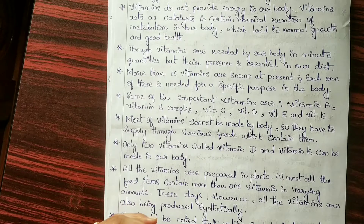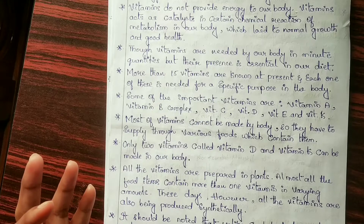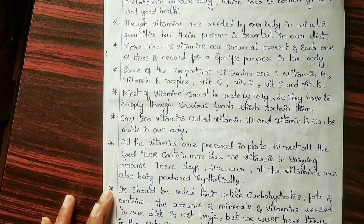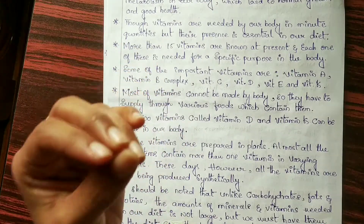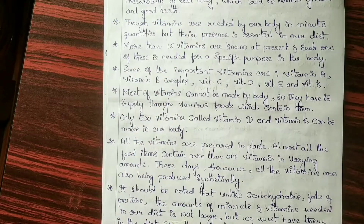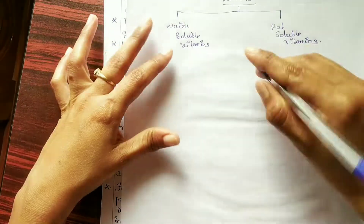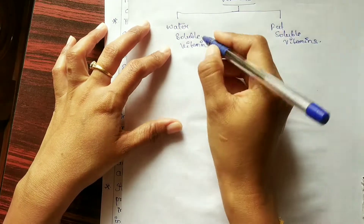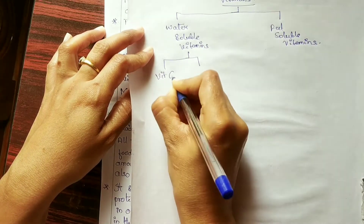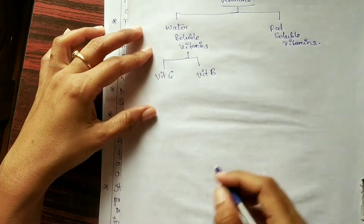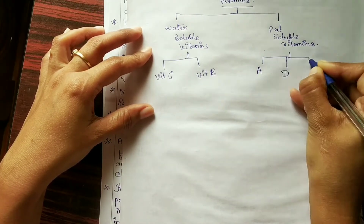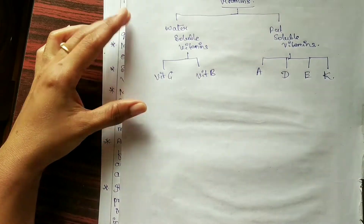Unlike carbohydrates, fats and proteins, the amount of vitamins needed in our diet is not large — it is very minor — but we must have them in our diet since the body doesn't make most of these substances. Vitamin C and vitamin B are water-soluble vitamins, while vitamin A, vitamin D, vitamin E and vitamin K are fat-soluble vitamins. We will study all of these in more detail in the next chapter.